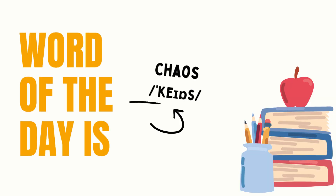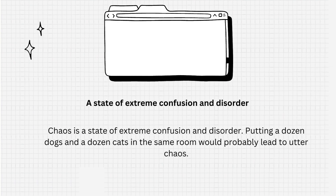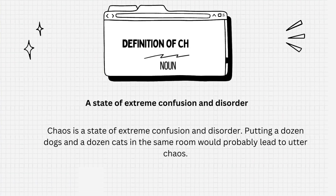Let us begin. Today's word is chaos, spelled C-H-A-O-S. Chaos is a noun. Definition of chaos: a state of extreme confusion and disorder.